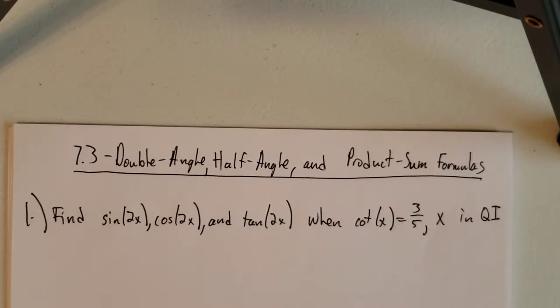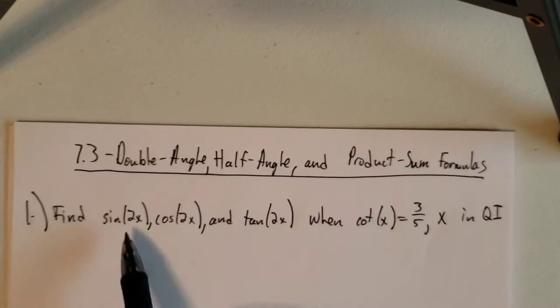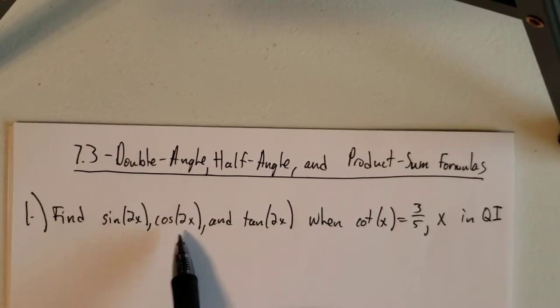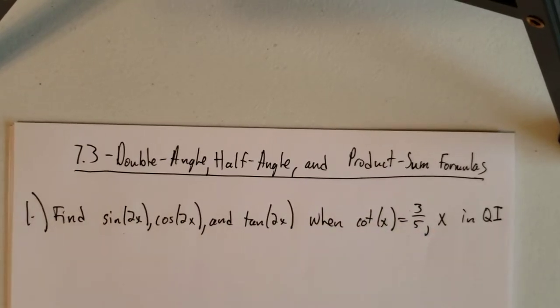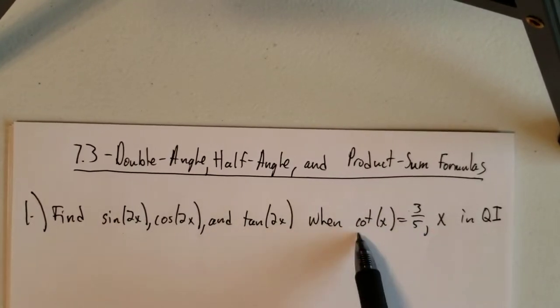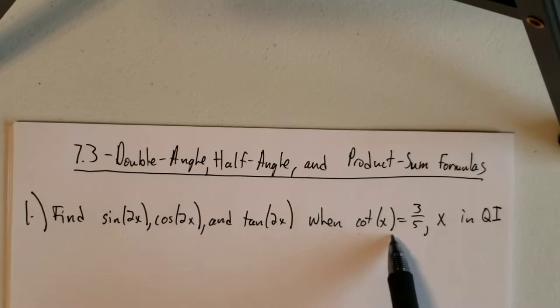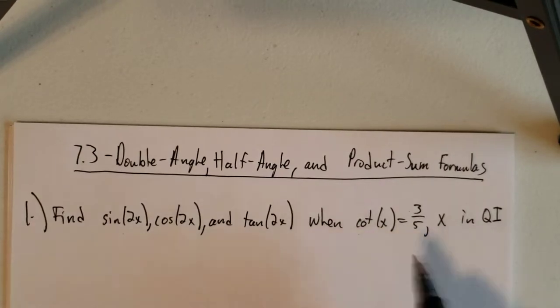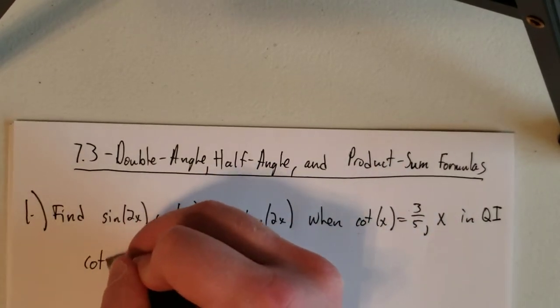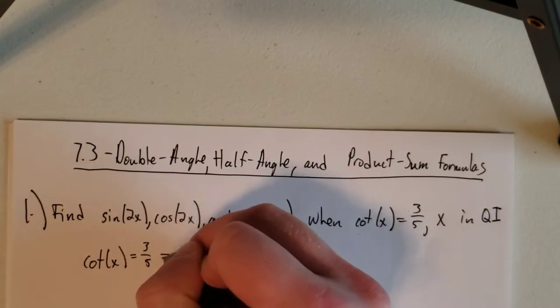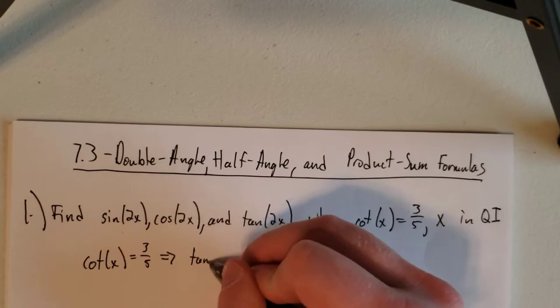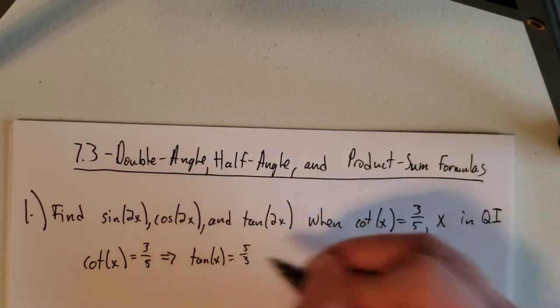Our first one here asks us to find sine of 2x, cosine of 2x, and tangent of 2x when cotangent of x is 3 over 5 and x is in quadrant 1. So the first thing you want to do is look at this information and write out what that means. Well, cotangent of x is equal to 3 fifths, which implies that tangent of x is equal to 5 over 3.